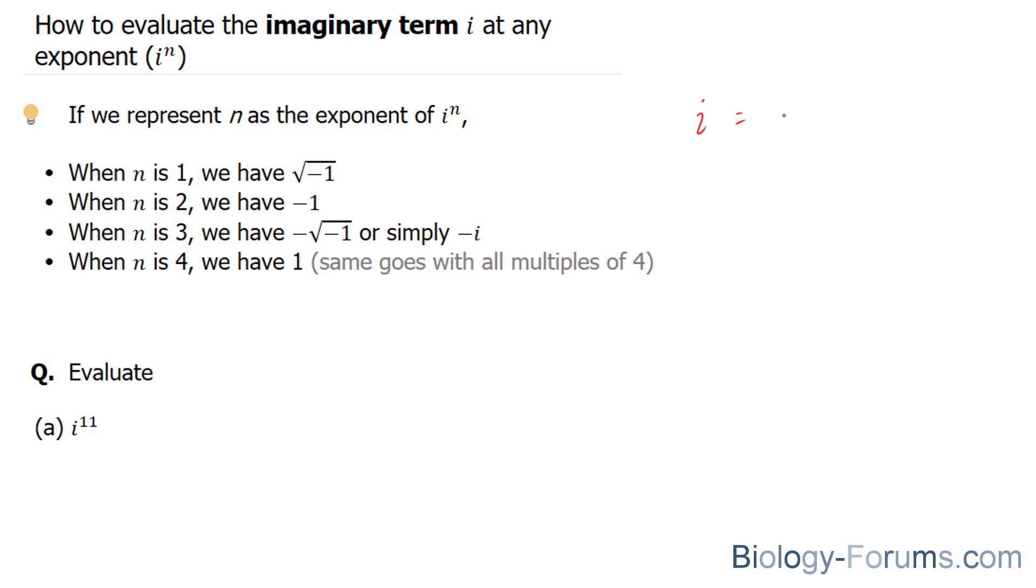represents the square root of negative 1. If we were to square this i value, we would end up with the following: the square root of negative 1 times the square root of negative 1. And we know from prior knowledge that square rooting the same base twice eliminates the square root, leaving us with negative 1.